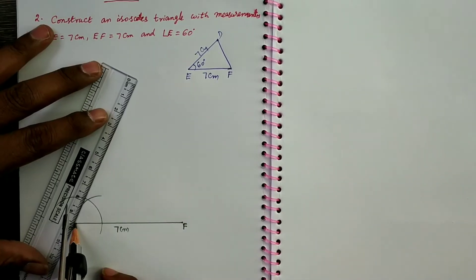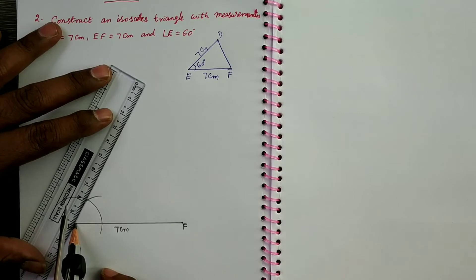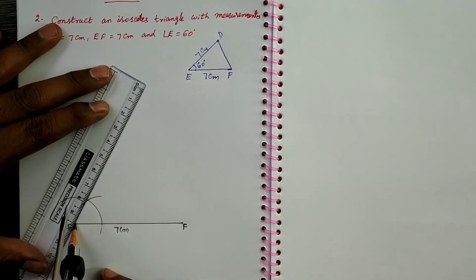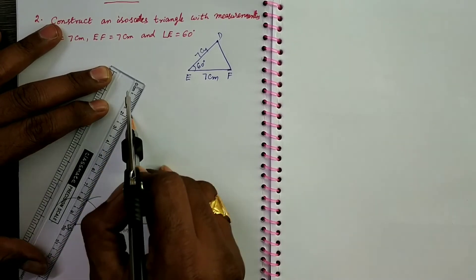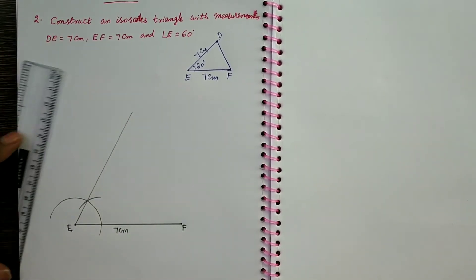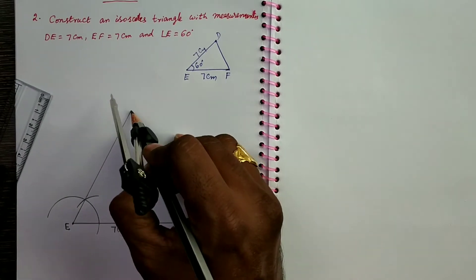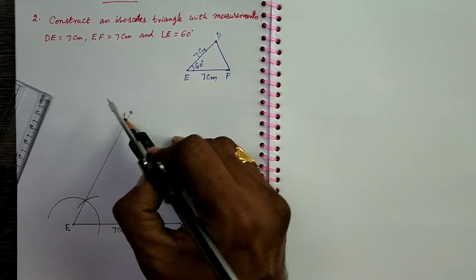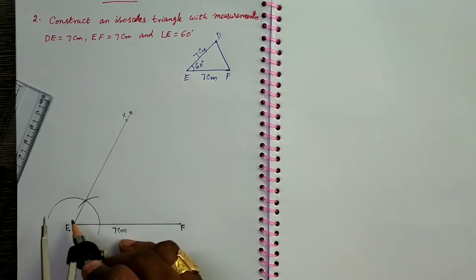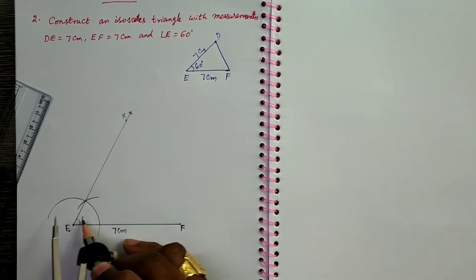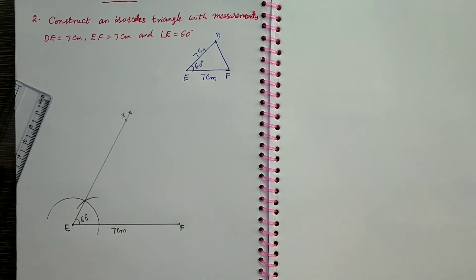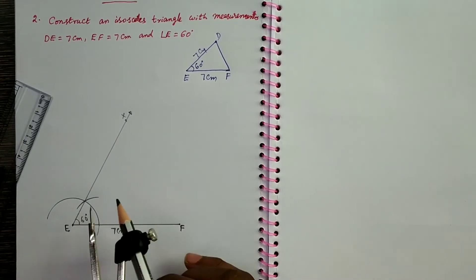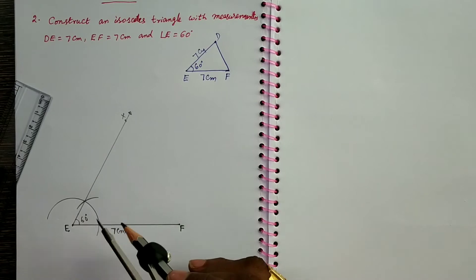So from E through this intersecting point draw a ray. This ray makes an angle 60 degrees with EF. 60 degrees. So this way we can construct without using protractor.